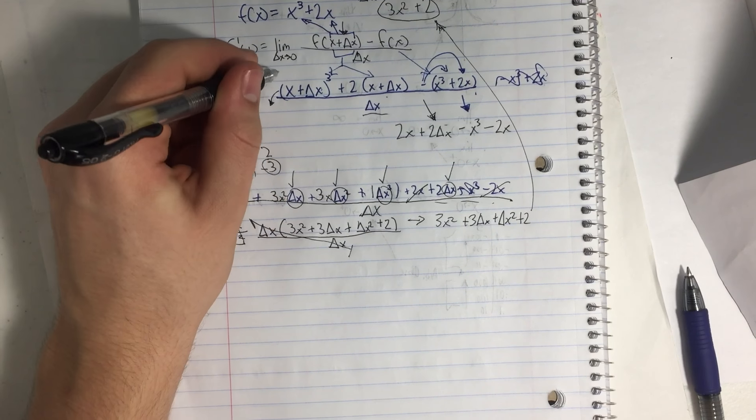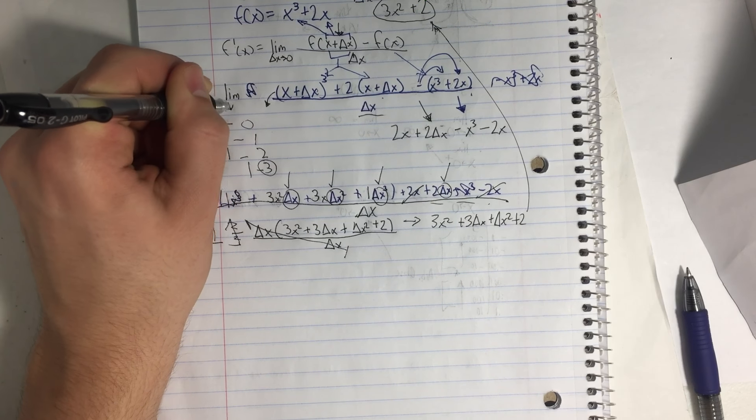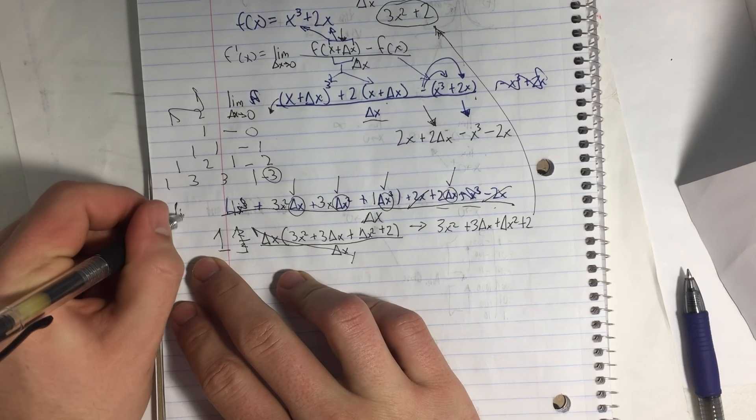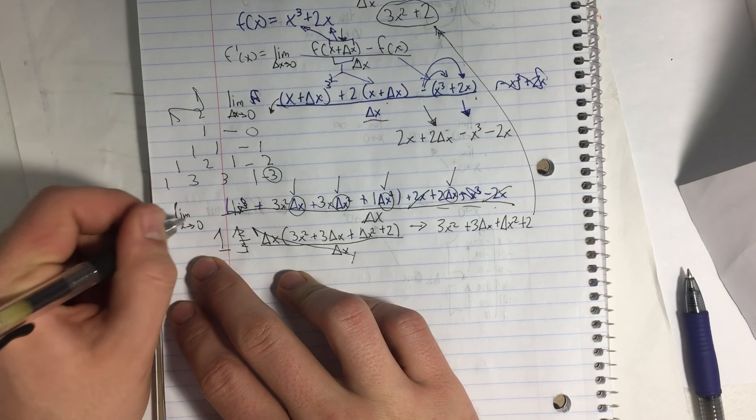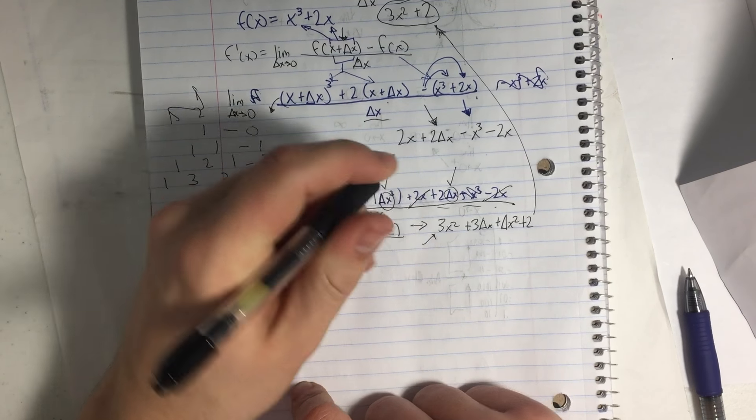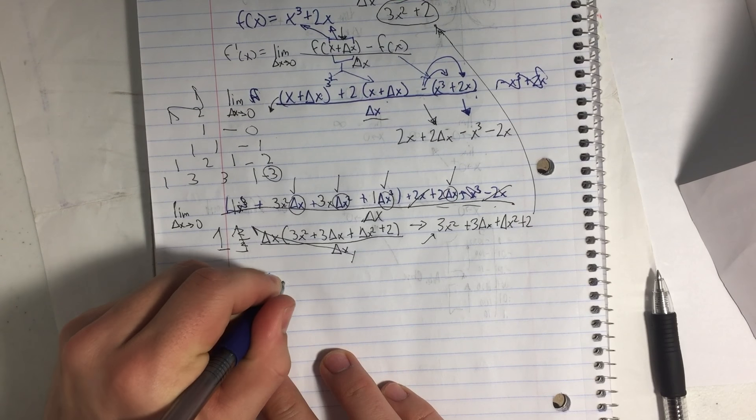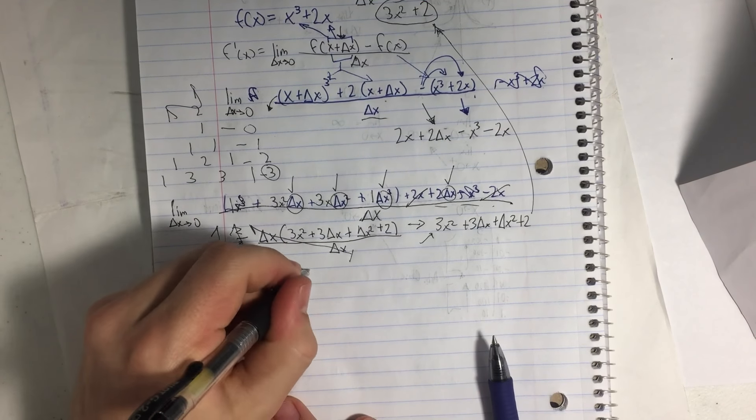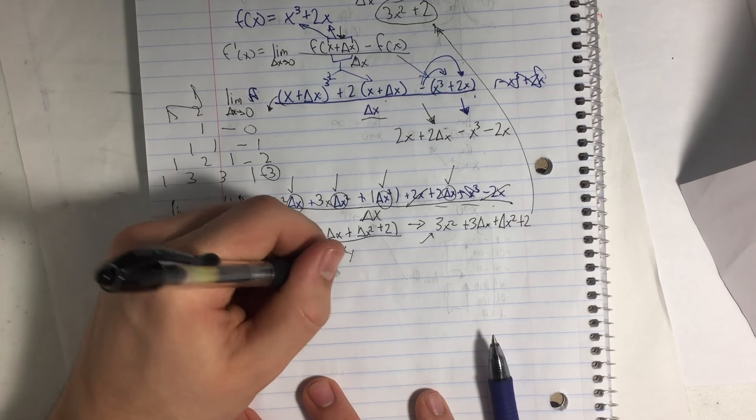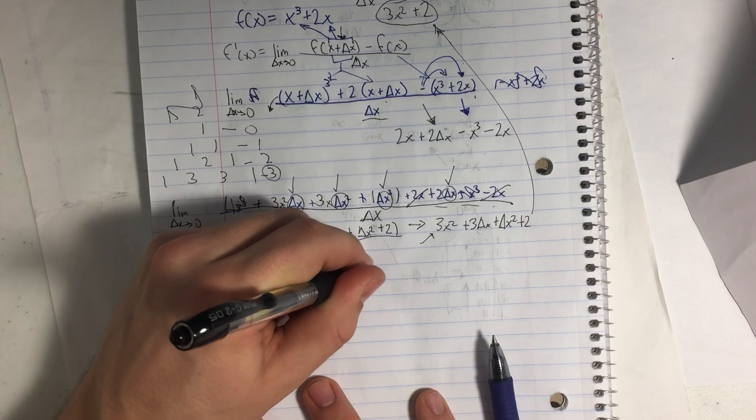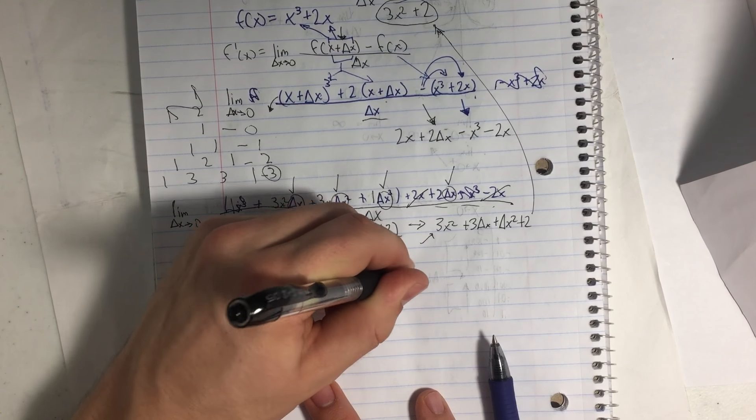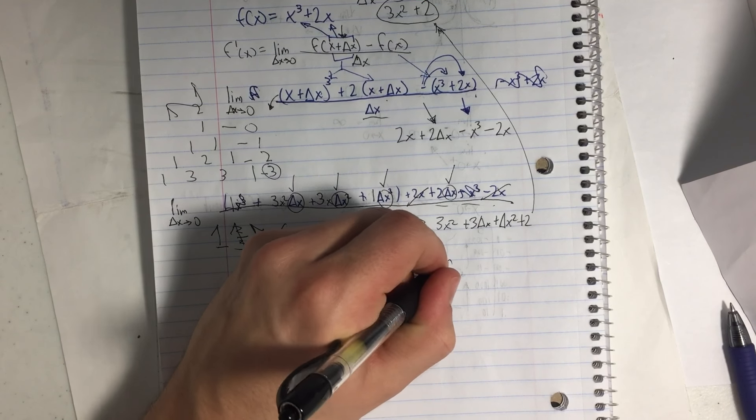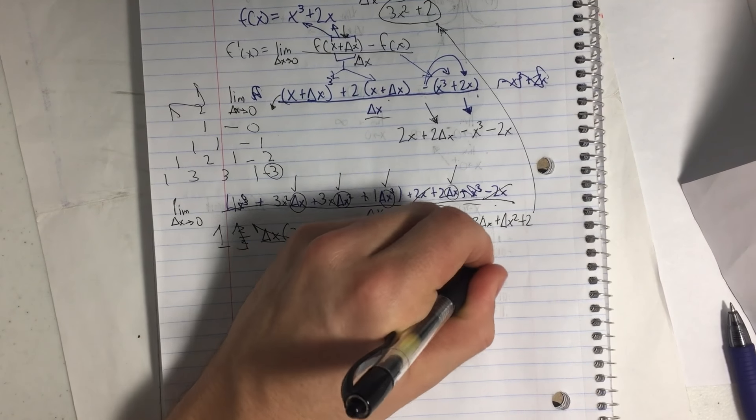Well, don't forget your limit notation. We should have been writing that the whole way. Limit as Δx approaches 0 right here. Limit as Δx approaches 0. And still right here. So we'll write it one more time. The limit as Δx approaches 0 for 3x² + 3Δx + Δx² + 2. So now if we go back to solving limits, we're just going to use direct substitution.